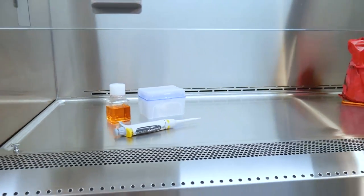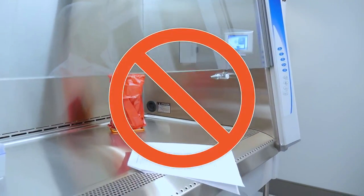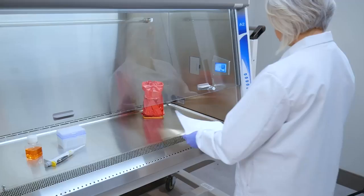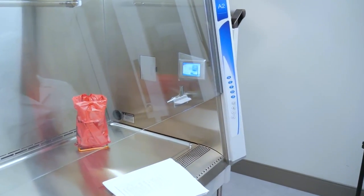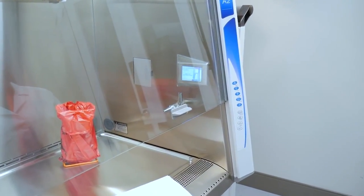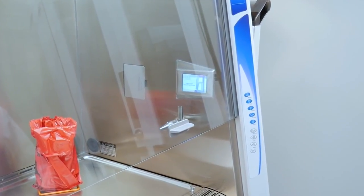Be sure to place materials in the middle of the work surface, taking care not to block airflow grills at the front or rear of the cabinet. The cabinet will alert you of blockages and the cabinet's blower will automatically compensate to maintain safe airflow. However, any blockages should be corrected immediately.